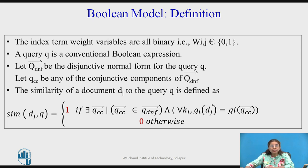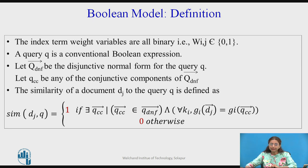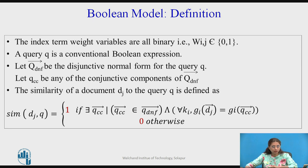In the DNF we can have the conjunctive components, which are referred to as qCC. Once we have entered a query, we are going to convert it into its DNF, and then after converting into the DNF we are going to find the similarity of the document — identifying which documents are relevant to the given query.